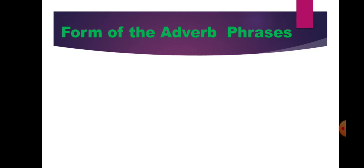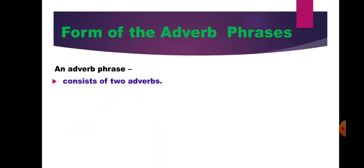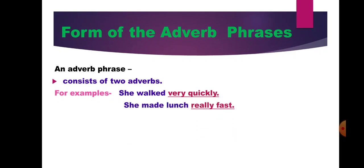In which form will we find adverb phrases in a sentence? An adverb phrase can consist of two adverbs together. Example: 'She walked very quickly' — very quickly, both words are adverbs, and this group of words is an adverb phrase. When you get two adverbs together in a sentence, that group of words is an adverb phrase. Another example: 'She made lunch really fast' — really and fast are both adverbs, and since an adverb is used as its head word, 'really fast' is an adverb phrase.